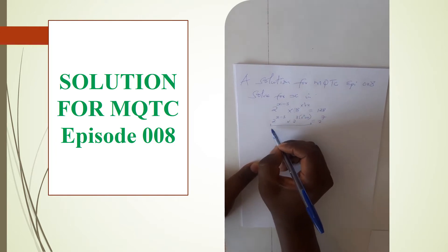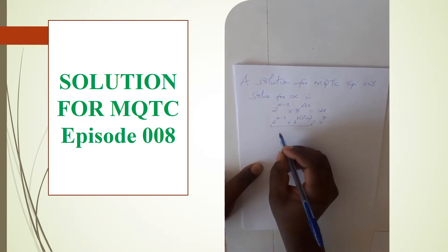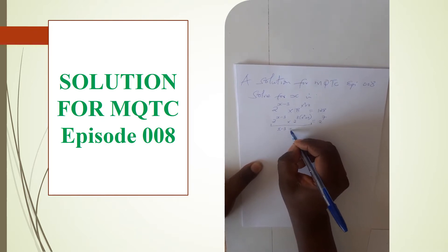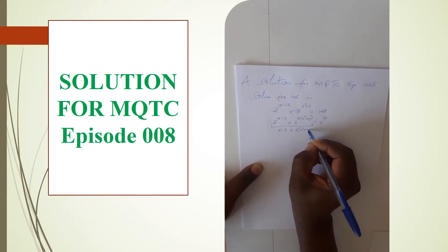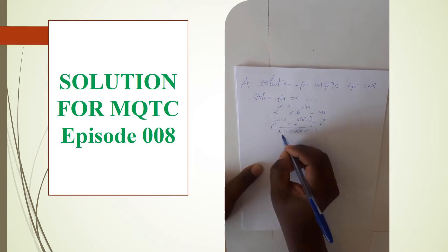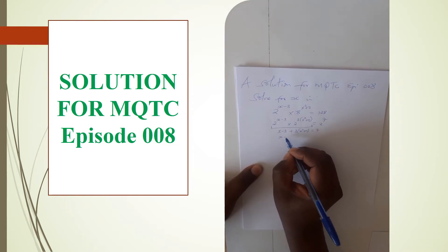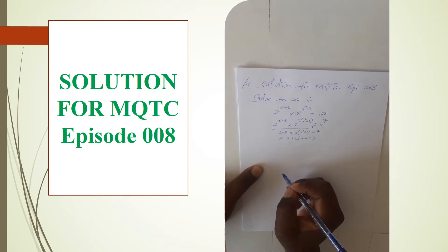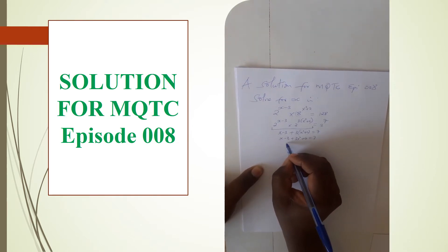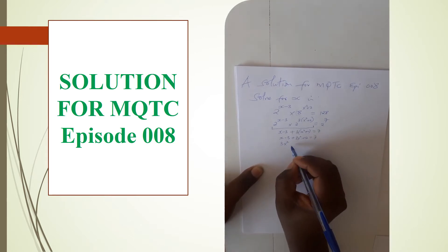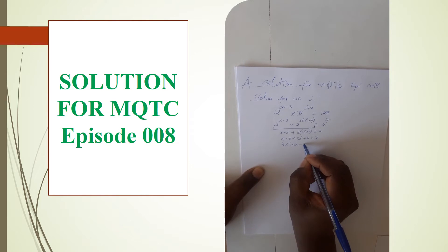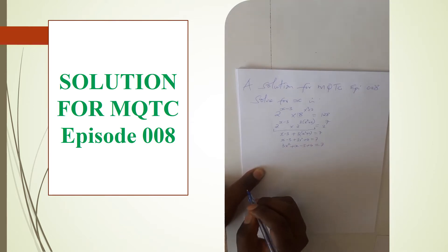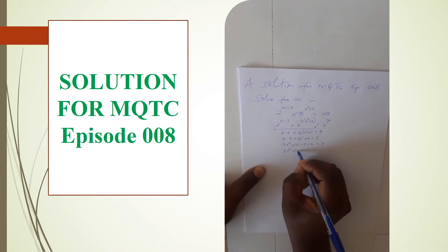Therefore we can now use the concept of indices: where there is multiplication and the bases are the same, we add the powers. You will see us saying (x minus 3) plus 3(x² + 2) equals 7. Opening the brackets we will have x minus 3 plus 3x² plus 6 equals 7. Putting like terms together we will have 3x² plus x, then minus 3 plus 6 equals 7.